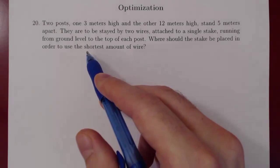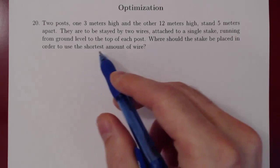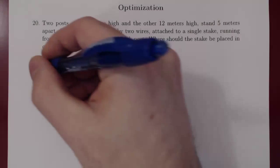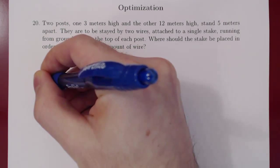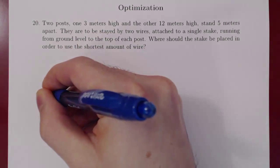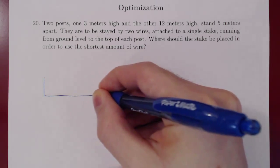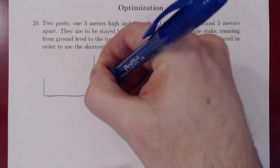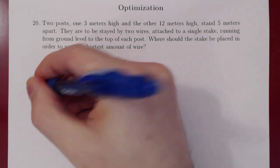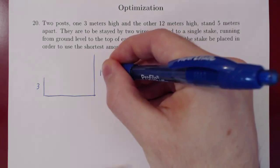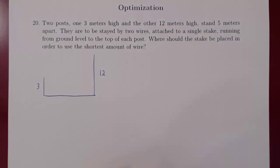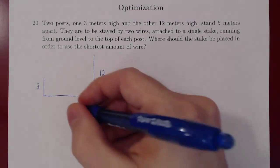Since we're asking for the shortest amount of wire, we will try to minimize the length of wire used. We have a 3 meter post, there's the ground, and there is a 12 meter post. Obviously my picture is not up to scale — that doesn't matter. So this is 3, a constant. This is 12, also a constant. And the poles are 5 meters apart, so the length of this segment is 5.